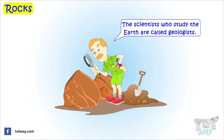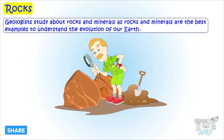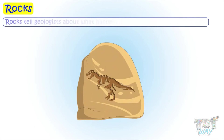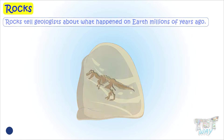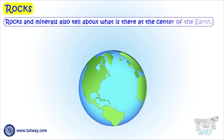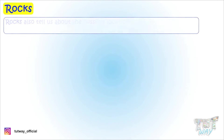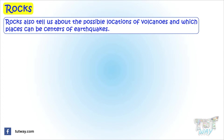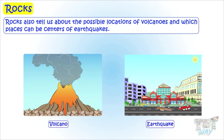The scientists who study the Earth are called geologists. Geologists study rocks and minerals, which are the best examples to understand the evolution of our Earth. Rocks tell geologists about what happened on Earth millions of years ago. Rocks and minerals also tell about what is there at the center of the Earth. Rocks also tell us about the possible locations of volcanoes and which places can be centers of earthquakes.